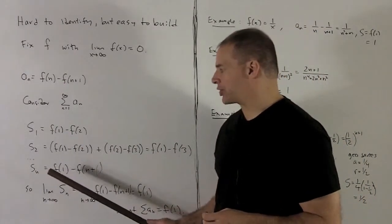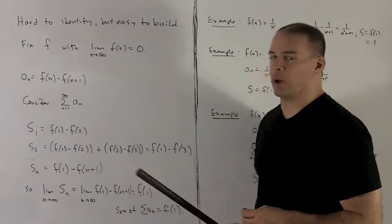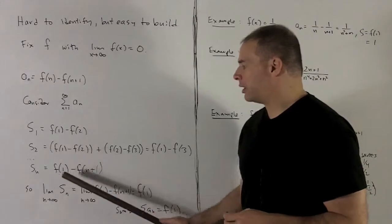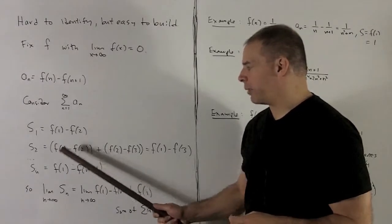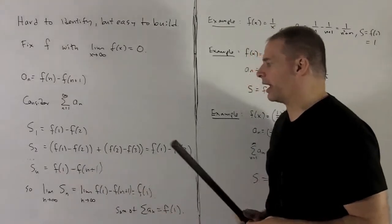And in general, we'll see that the nth partial sum is going to be f of 1 minus f of n plus 1. So again, the entire inside of the sum of a1 through an is going to collapse out, leave me with the things on the end.